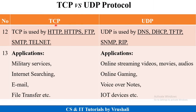TCP is used by application layer protocols such as HTTP, HTTPS, FTP, SMTP, and Telnet. UDP is used by protocols such as DNS, DHCP, TFTP, and SNMP.